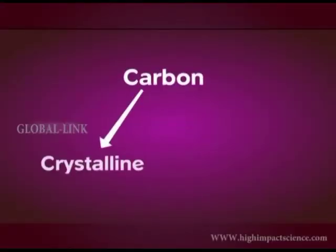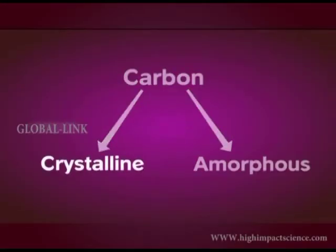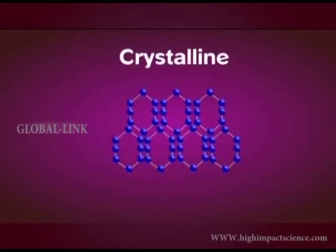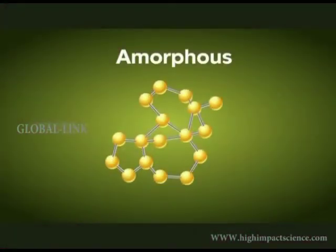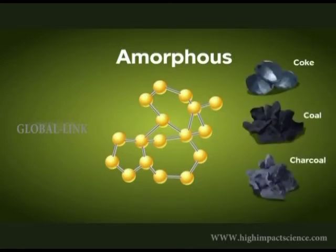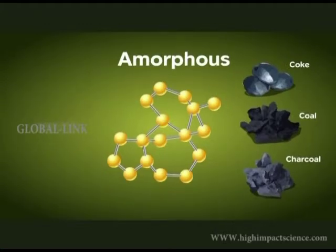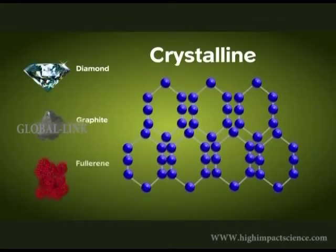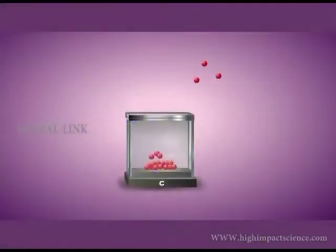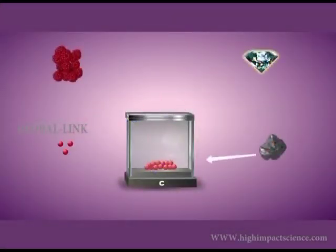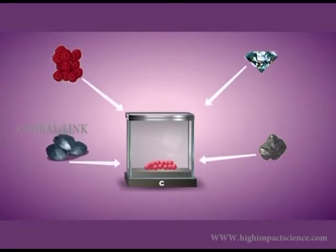Carbon exists in two forms: crystalline and amorphous. In crystalline solids, the constituent particles are arranged in a definite order. But in amorphous solids, the particles have no definite order of arrangement. Coal, cork, and charcoal are amorphous forms of carbon. Diamond, graphite, and fullerene are crystalline forms of carbon. Both these forms are called allotropes of carbon. Allotropes are forms of the same element which exhibit different physical properties but with the same chemical composition.